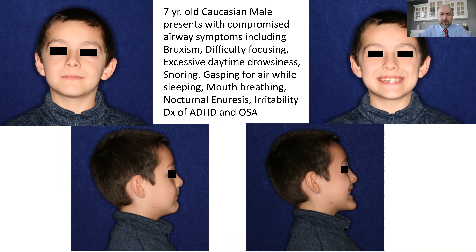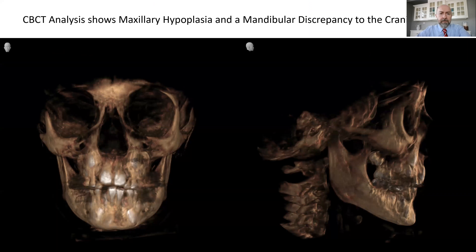We can see from these pictures that his jaws are underdeveloped, that the bones are out of alignment, there are a lot of asymmetries, and he struggles to keep his lips together. We took a CBCT to analyze his head and neck, and that along with a cephalometric analysis showed that he did in fact have maxillary hypoplasia — an underdeveloped upper jaw — that was causing a mandibular discrepancy to the cranial base.